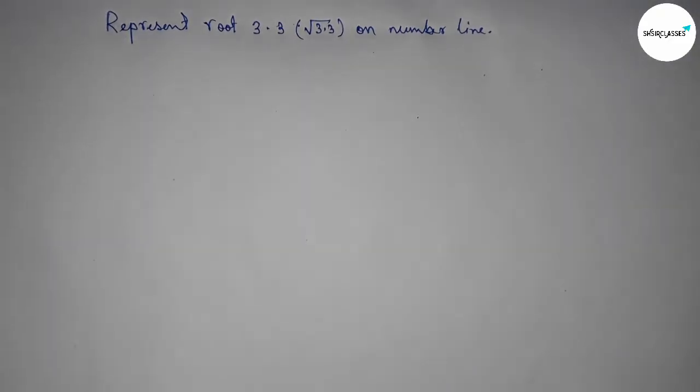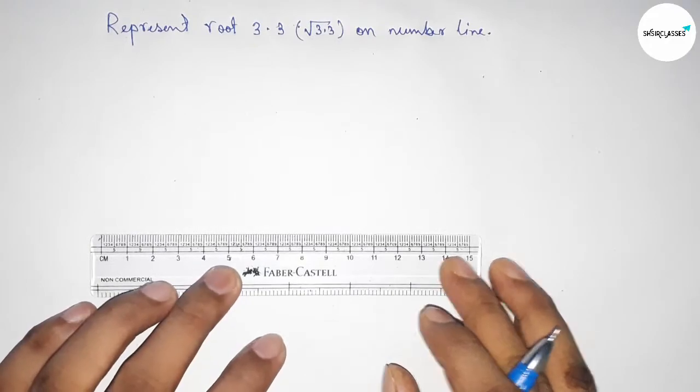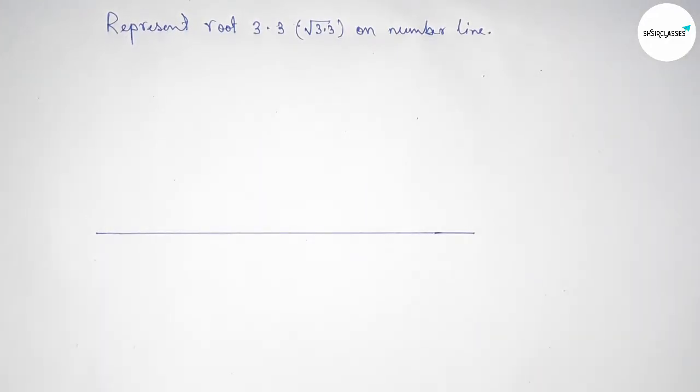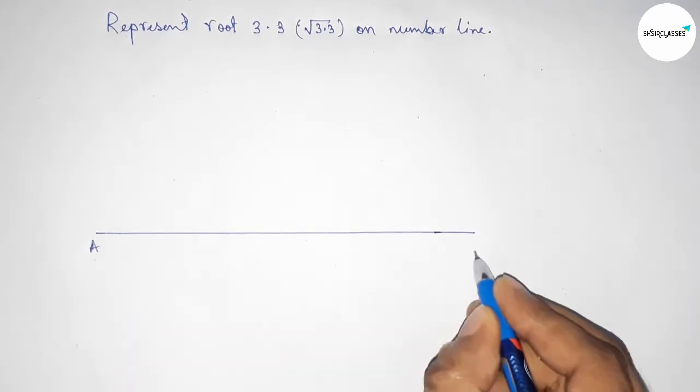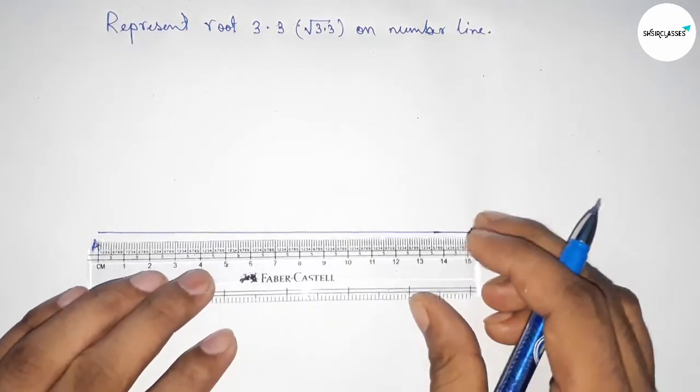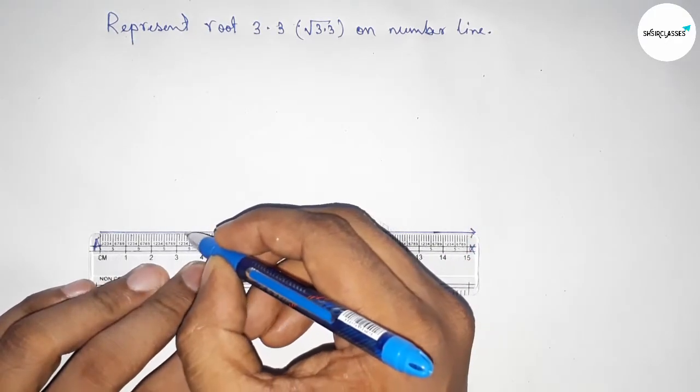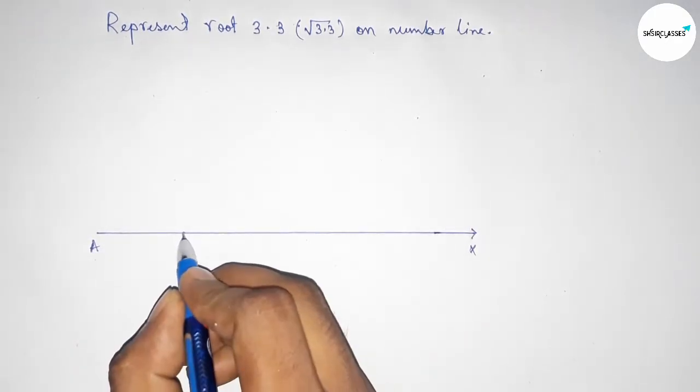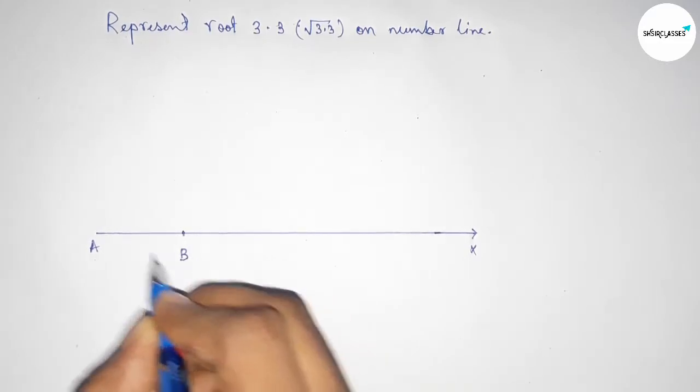First of all, draw a line of any length. This is the AX line. Next, take a distance of 3.3 centimeters. So this is 3.3 centimeters. This is point B, so AB equals 3.3 centimeters.